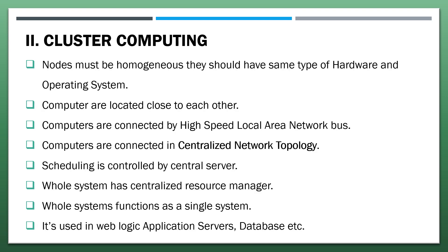Cluster computing: nodes must be homogeneous — they should have the same type of hardware and operating system. Computers are located close to each other and connected by a high-speed local area network bus. Computers are connected in a centralized network topology. Scheduling is controlled by a central server, and the whole system has a centralized resource manager. The whole system functions as a single system, and it is used in web logic application servers, databases, etc.